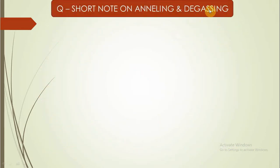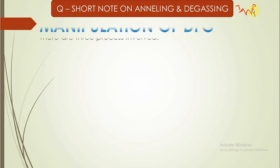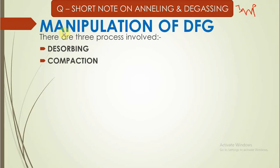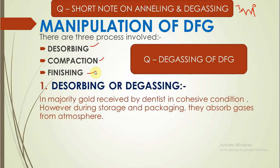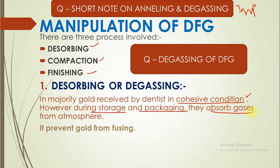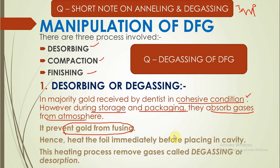The most important question from this topic is a short note on annealing and degassing of DFG. Manipulation of DFG has three processes: degassing, compaction, and finishing. De-swabbing or degassing: even though most of the gold dentists receive is cohesive in nature, during storage or packing it absorbs gases from the atmosphere, which will prevent the fusion of gold. To overcome this, we heat the gold before placing it into the cavity. This process of heating, by which removal of gases occurs, is called degassing or de-swabbing.